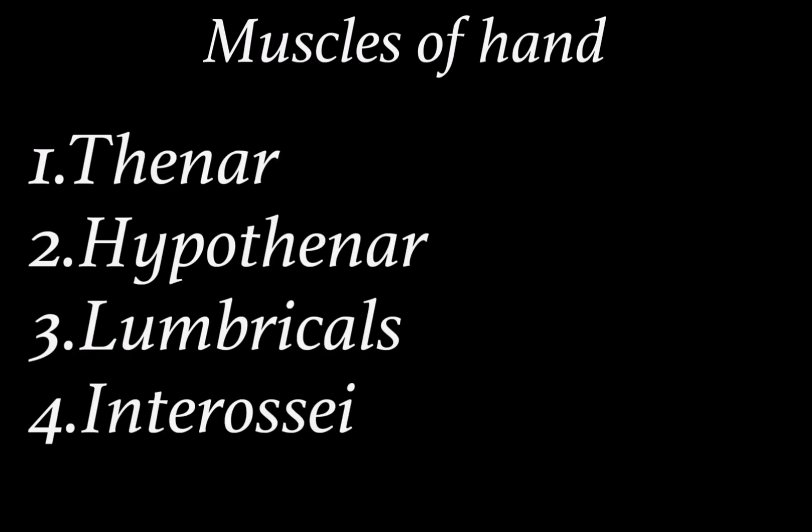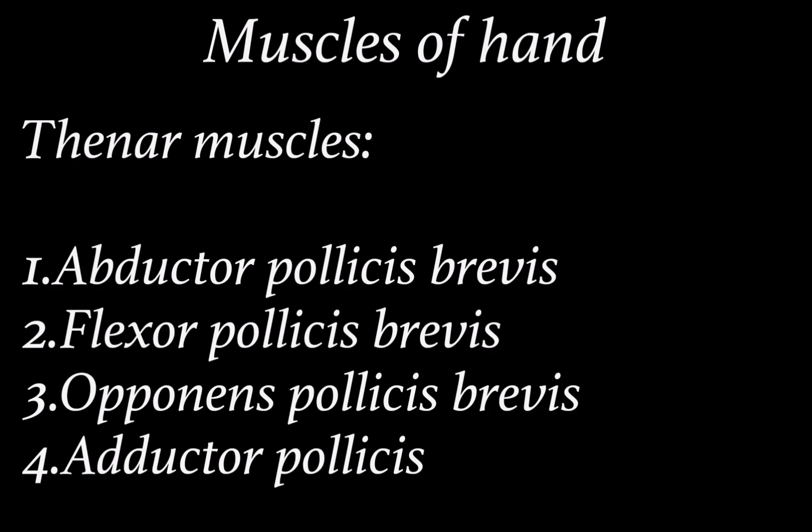Moving on to the muscles of the hand — here also, not all muscles are critical to memorize; just remember the names if you can. The muscles of the hand are divided into four compartments: thenar, hypothenar, lumbricals, and interossei. The thenar muscles include four muscles: abductor pollicis brevis, flexor pollicis brevis, opponens pollicis, and adductor pollicis.